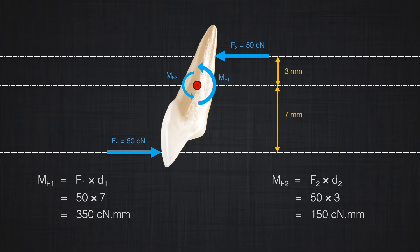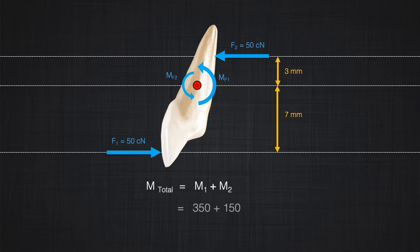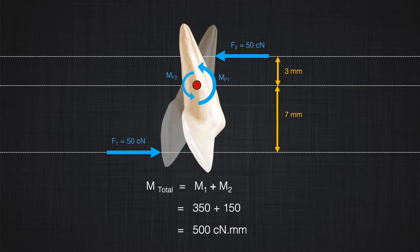We calculate F1: 50 centinewtons times seven millimeters equals 350 centinewton-millimeters. F2: 50 centinewtons times three millimeters equals 150 centinewton-millimeters. The total moment in the system is the sum of M1 and M2, which together become 500 centinewton-millimeters. Now let's look at some interesting rules we can find here.